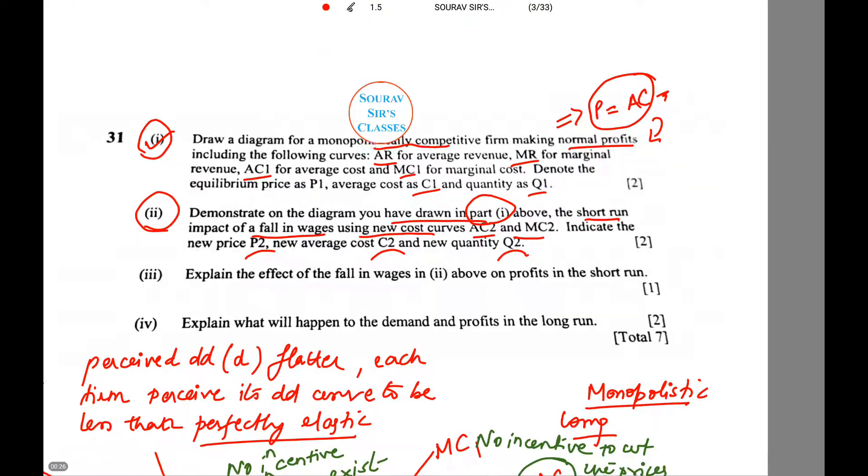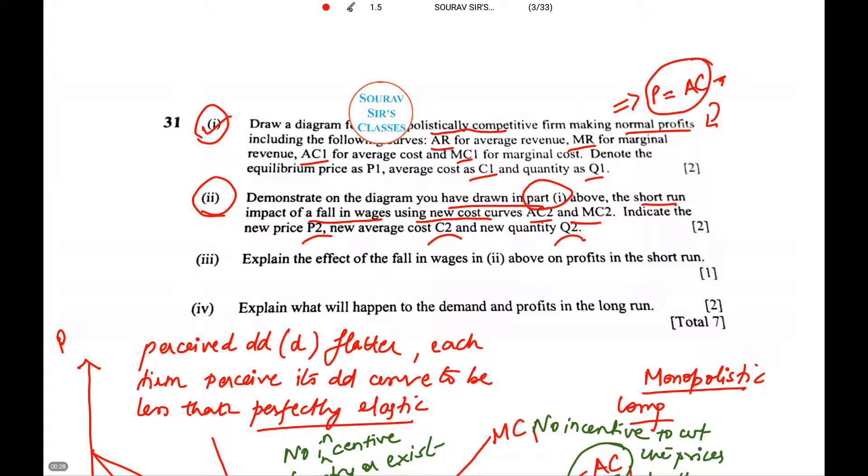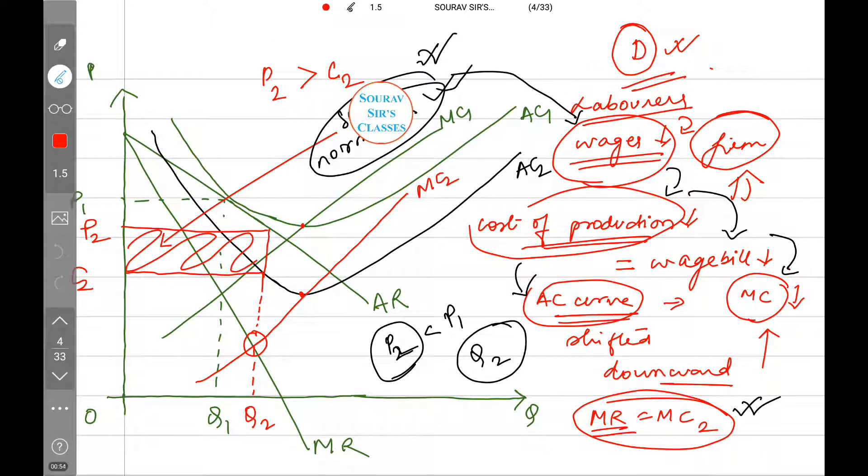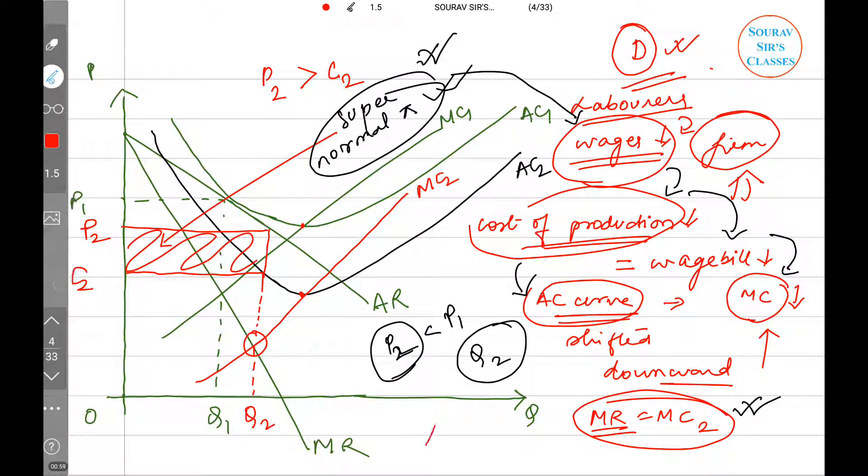Previously we have solved the first two question parts. Today in this particular tutorial we will be focusing on part 3 and part 4. Part 3 says explain the effect of a fall in wages in part 2 above on profits in the short run.